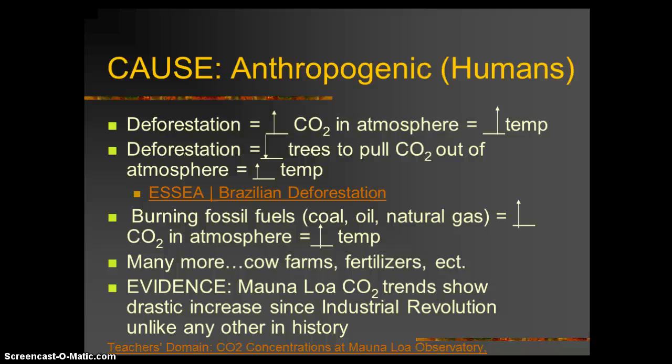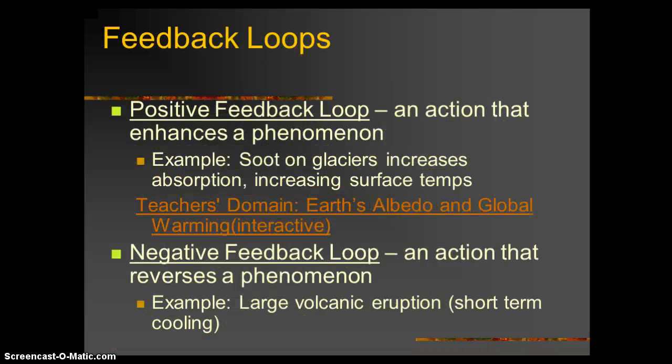I need to cover feedback loops. A positive feedback loop — positive does not mean good — is an action that enhances a phenomenon and continues it. So if we talk about global warming, it's something that will continue or enhance global warming — more warming. For example, soot on glaciers increases the absorption of energy and its conversion into heat, thereby increasing the surface temperature.